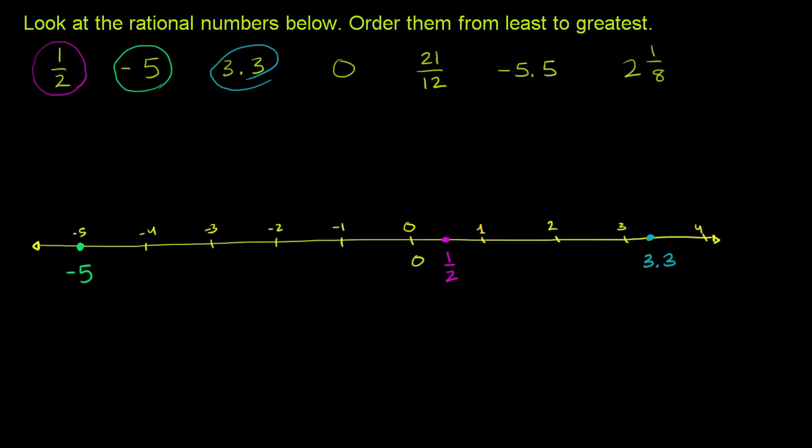And then we get to 0, which is one of the numbers that we've already written down. 0 is obviously right over there on the number line. So I'll just write this 0 in orange to make it clear. It's this 0.